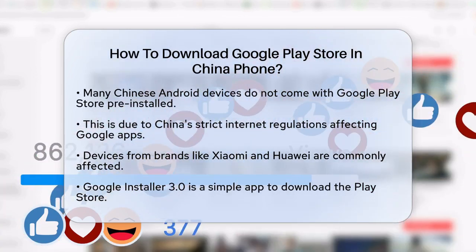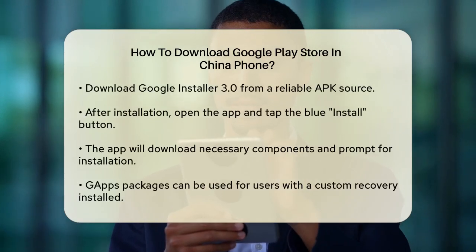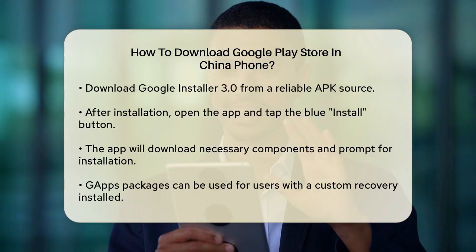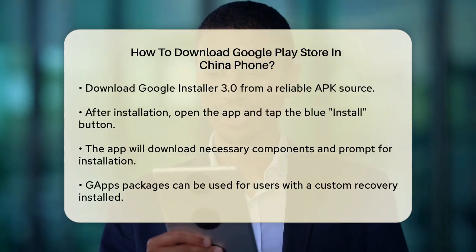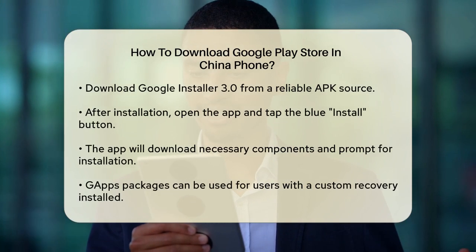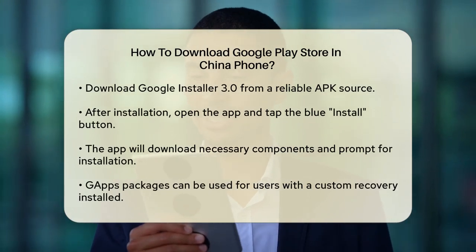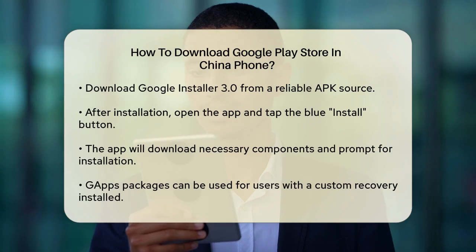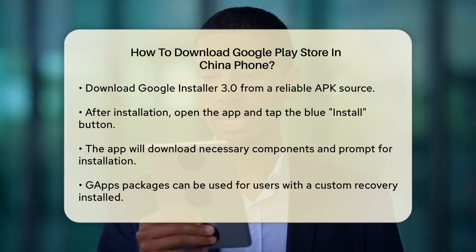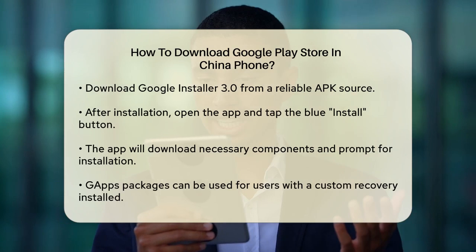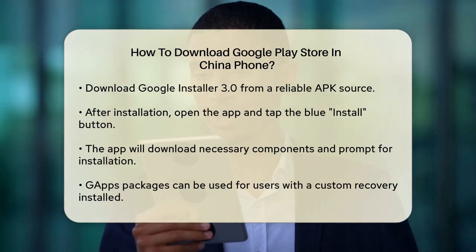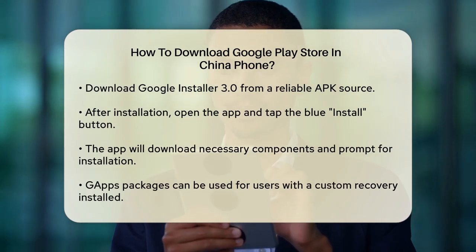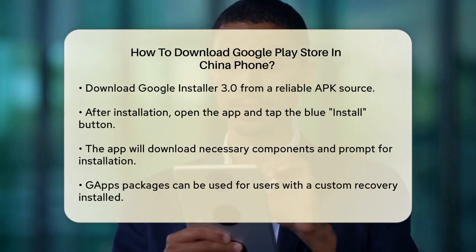So how do you get the Google Play Store on your Chinese phone? Here are a few methods. One of the simplest ways is to use an app called Google Installer 3.0. You can download this app from a reliable source, such as a website that offers APK files. Once you've downloaded and installed Google Installer 3.0, open the app and tap on the big rounded blue button that says Install. This will start downloading all the necessary components one by one, and after each download, you'll be prompted to install the packages through your device's package installer.